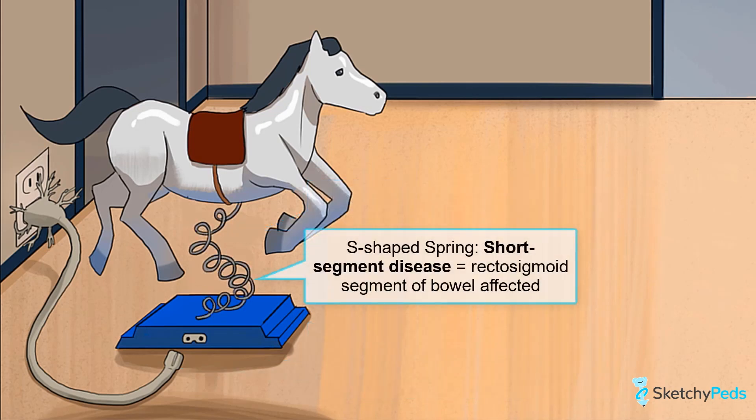Hirschsprung's disease can also be classified based on the length of bowel affected. The most common is short segment disease, where the rectosigmoid segment is affected — hence this S-shaped spring. Long segment disease is where there is extension proximal to the sigmoid colon. Rarely, the whole colon may be affected, and very rarely the large and small bowel can both be affected.